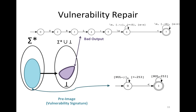We want to remove the mapping from bad inputs to bad outputs. One strategy is to reject the input: block the bad input by simulating the vulnerability signature automata. We output code that simulates the automata on the input, and if the input is accepted by the automata — meaning it is in the bad input language — we reject it.